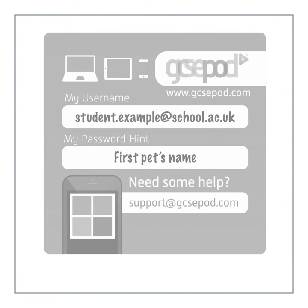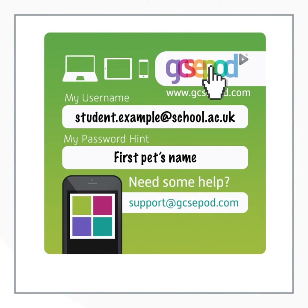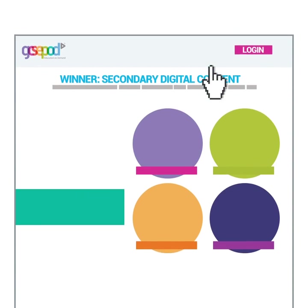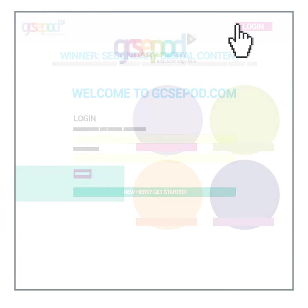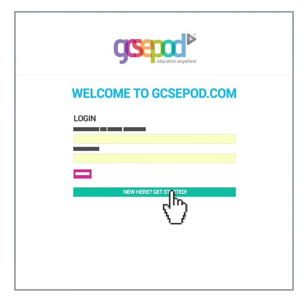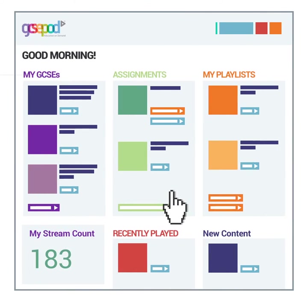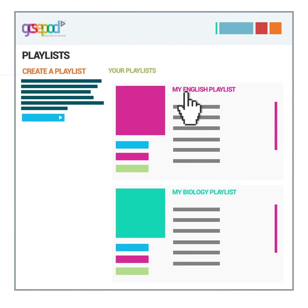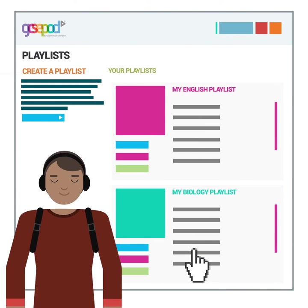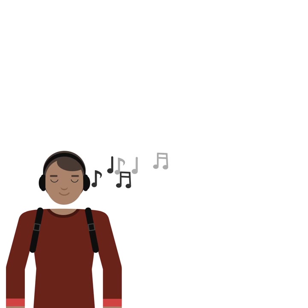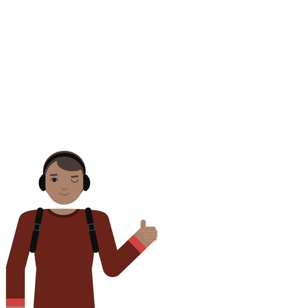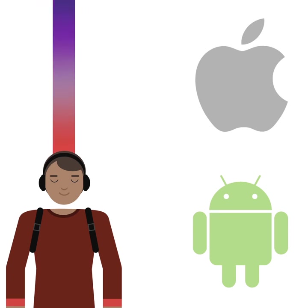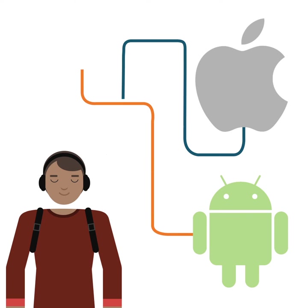Your child has already been registered by the school and simply needs to activate their account. Visit GCSEpod.com, click log in and then click new here, get started. Once your child has activated their account, they can browse our pod library and create their own playlists, just as they would when they're listening to music. And because it looks like they're listening to music, no one needs to know they're actually swatting up. In addition, if your child has an Android or Apple device, they can download the relevant apps and stay connected wherever they are.